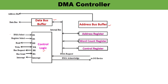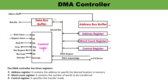DS denotes DMA Select. When this pin is active high (logic 1), DMA will be selected and will work. RS is Register Select — there are three types of registers: the address register, the word count register, and the control register. The address register holds the address of a specified memory location. The word count register contains the total number of words to be transferred. The control register specifies the transfer mode. Register Select (RS) helps select one register among these three.